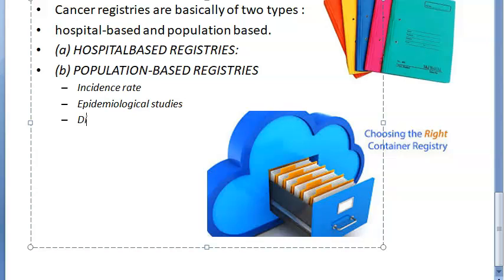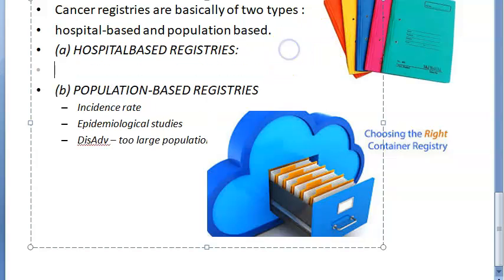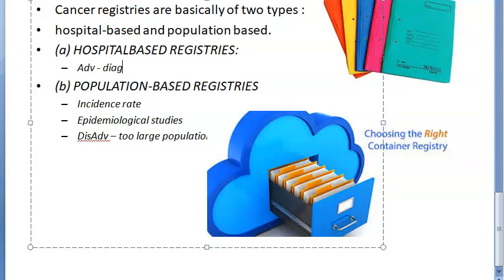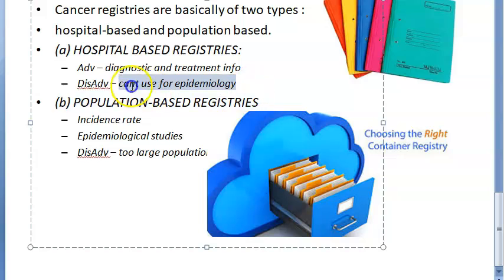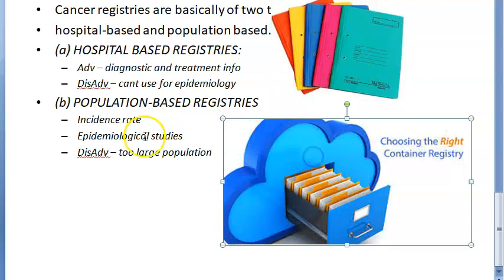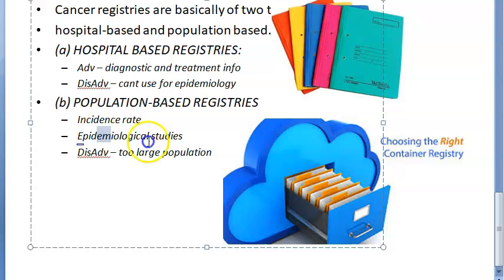The disadvantage of population-based registries is that the population is too large and you have too much information to manage. For hospital-based registries, you only get diagnostic and treatment information for a few people, and you cannot apply epidemiological studies. But when you collect all hospital information together, that can help. You will need population-based registries to do epidemiological studies, and you get incidence rates from population-based registries.